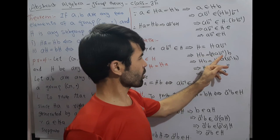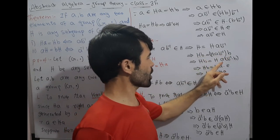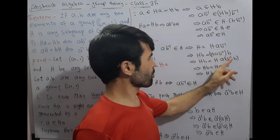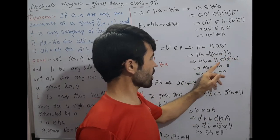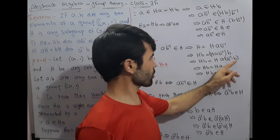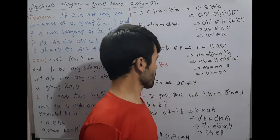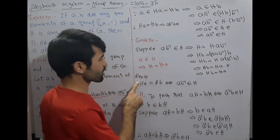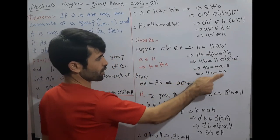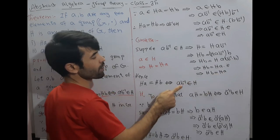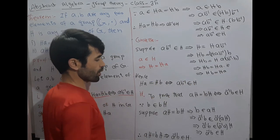H·b = H·a·b⁻¹·b. This implies Hb = Ha·(b⁻¹·b). Since b⁻¹·b = e, this implies Hb = Ha. Hence Ha = Hb if and only if a·b⁻¹ belongs to H.